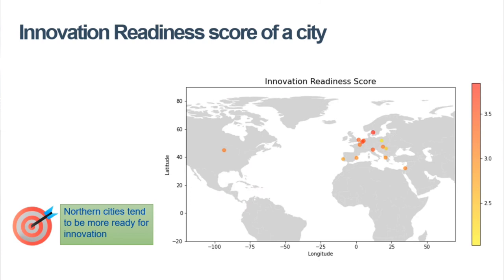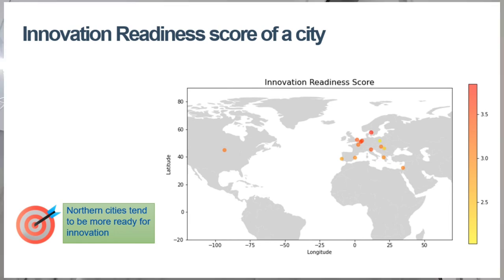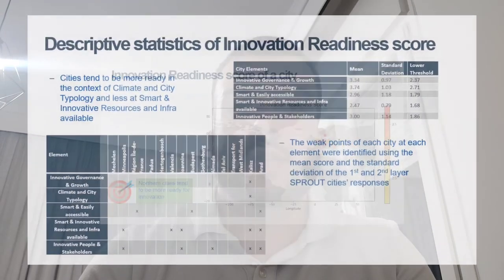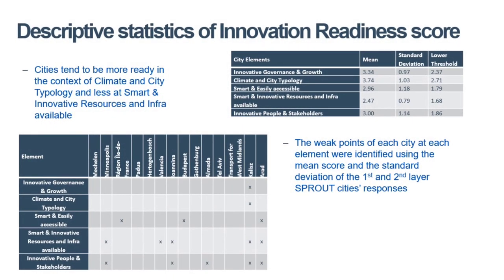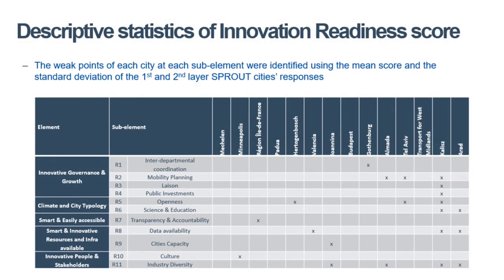Here is a map which contains all the different first and second layer Sprout cities. It can be seen that the northern cities tend to have higher scores of innovation readiness. When it comes to the elements, cities have a higher score in the climate and typology element, while the lowest score corresponds to smart and innovative resources and infrastructure. The same research has also been conducted at the sub-element level — for example, Ioannina is weak when it comes to city capacity or industry diversity.